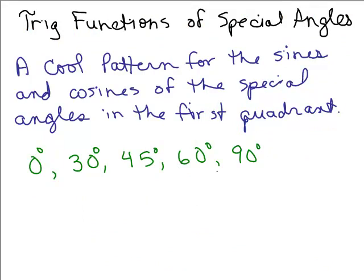We've talked about the special angles on the quadrants, like 0 degrees, 90 degrees, 180 degrees, et cetera. And we've talked about the special angles that come from the 30-60-90 triangle — so that's 30 degrees and 60 degrees. And we've talked about the 45-45-90 degree triangle, so the special angle there is 45 degrees.